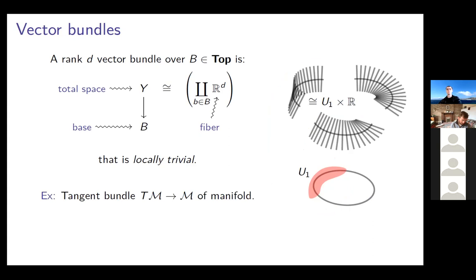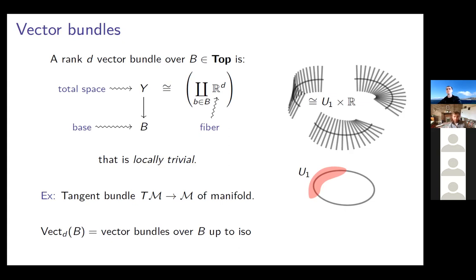One of the most important examples of vector bundles are the tangent bundles of differentiable manifolds, and this will appear later. We'll denote vector bundles up to isomorphism by Vect(B) — all vector bundles over B up to isomorphism. This is a set, and it's going to be important for us.